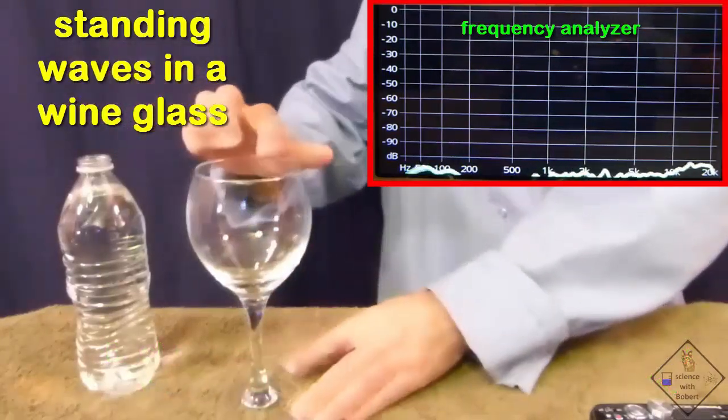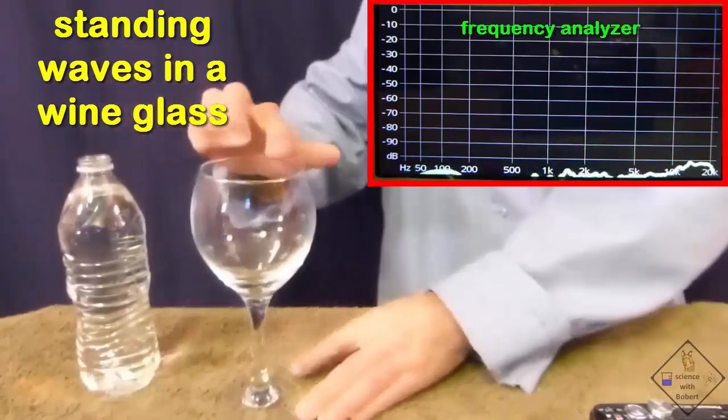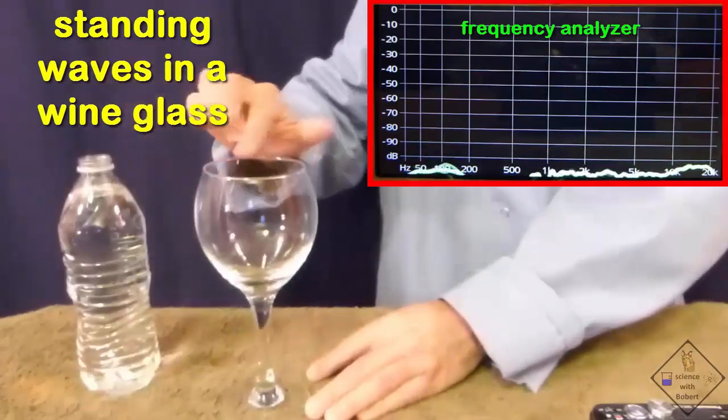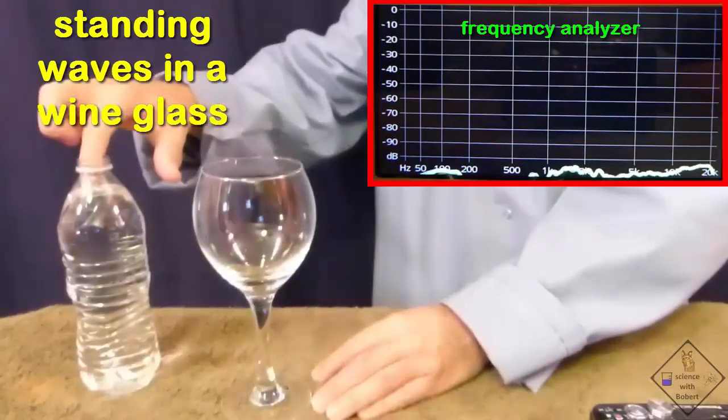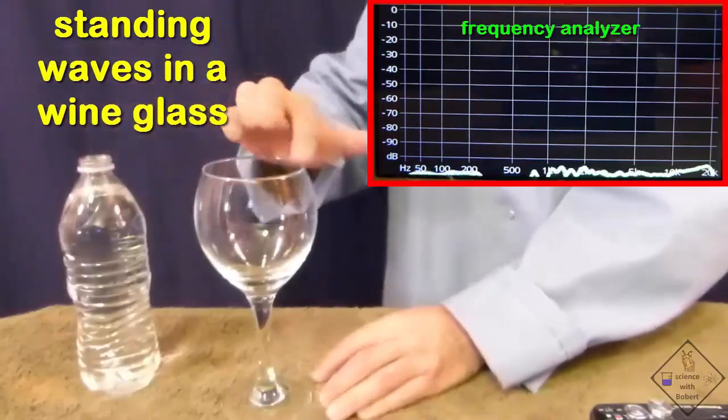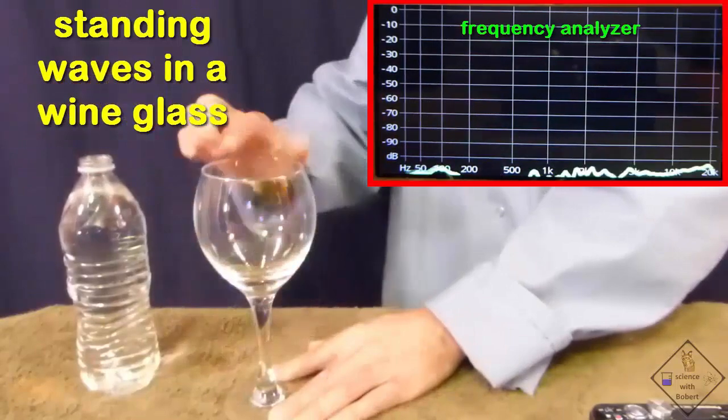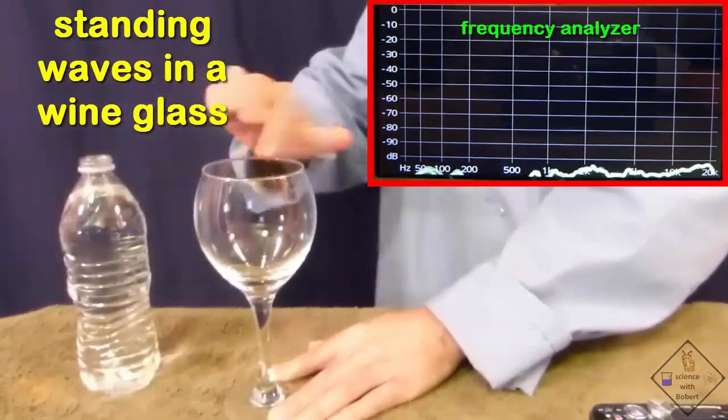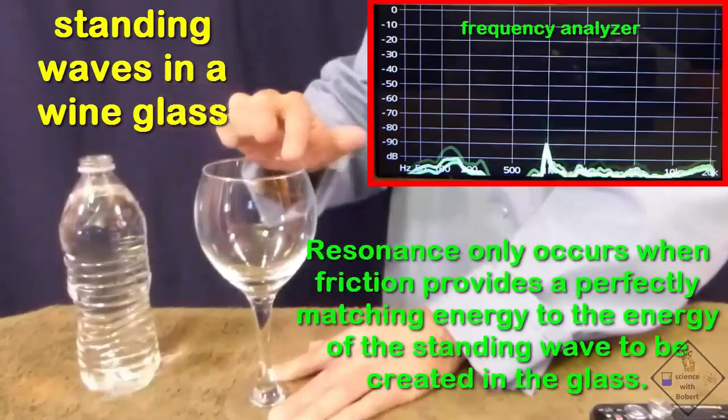However, creating standing waves in a wine glass is not as easy as it looks. Rubbing a dry finger along the rim of the glass provides too much friction, while rubbing a very wet finger does not have enough friction. Rubbing too fast does not work. Rubbing too slow does not work either.